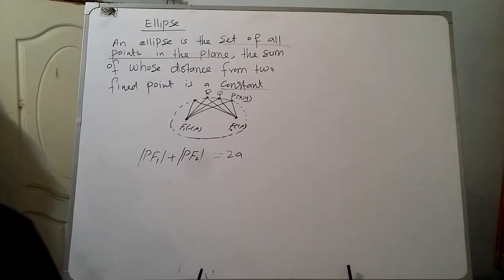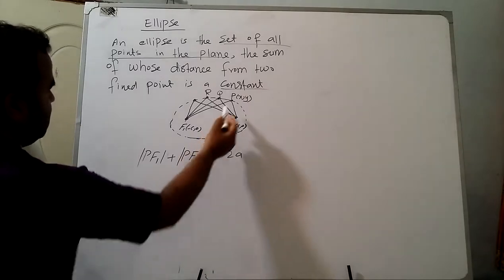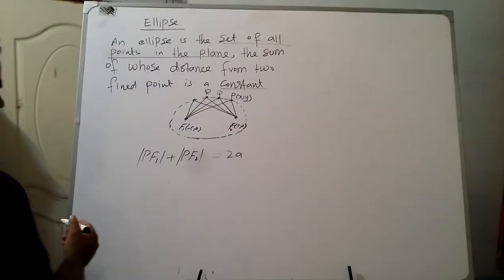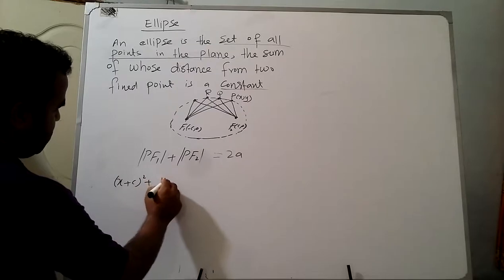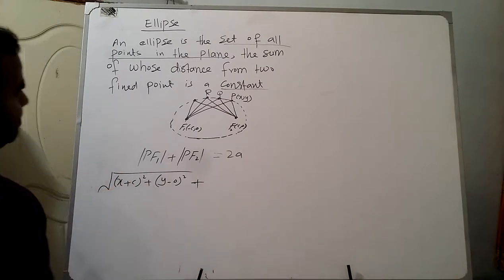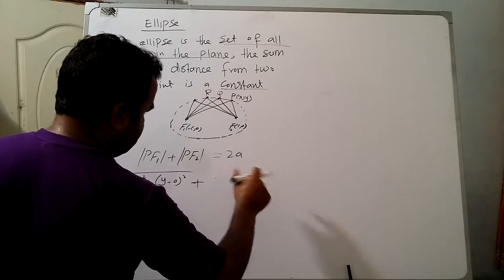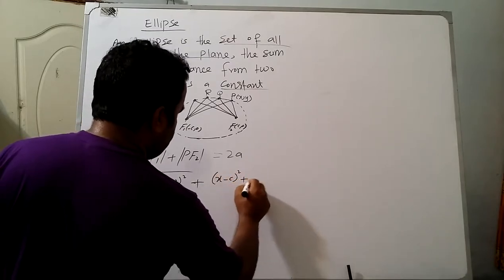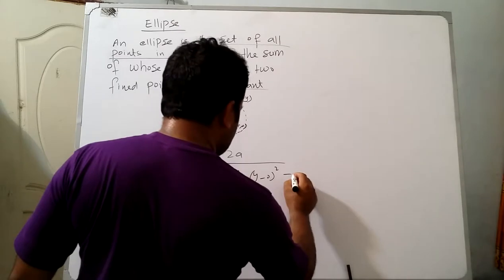For a point P(x, y) on the ellipse, using the distance formula: PF1 = √((x + c)² + y²) and PF2 = √((x - c)² + y²). The sum PF1 + PF2 = 2a gives us √((x + c)² + y²) + √((x - c)² + y²) = 2a.